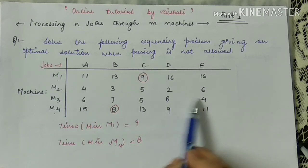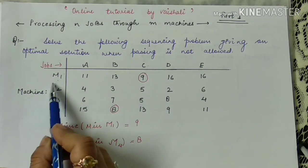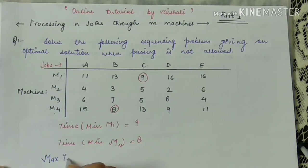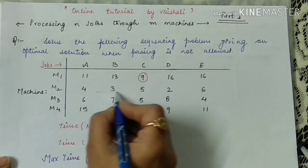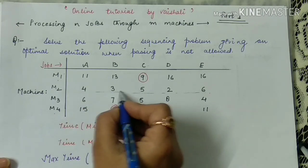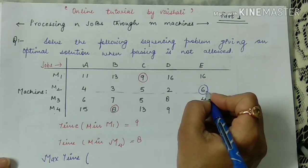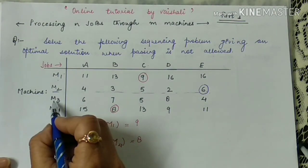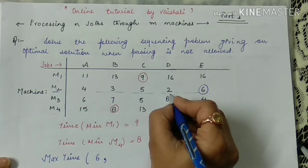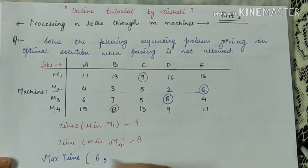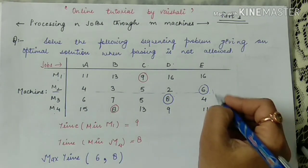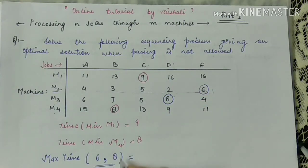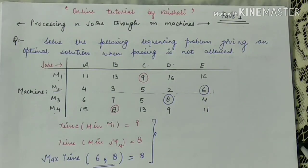For the intermediary machines — between the first and last — we find the maximum time. For M2: the values are 4, 3, 5, 2 — job E takes maximum time of 6 hours on M2. For M3: the values are 6, 7, 5, 8 — job D takes maximum time of 8 hours on M3. If we have more intermediary machines, we compare all of them. The maximum time among intermediary machines is 8 hours.